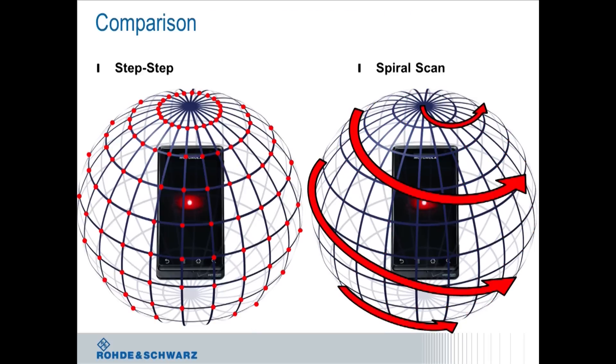So if you look at it, the step-step approach that is the classical and the CTIA-approved way of doing things is where you basically position your device and your test antenna to each point on these spheres. So you need to have 264 movements of the device slash the test antenna.